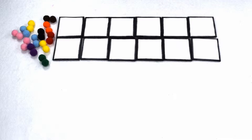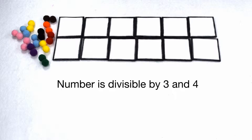If a number is divisible by 12, that means it's also divisible by 3 and 4. This means we need to know the divisibility rules for 3 and 4.